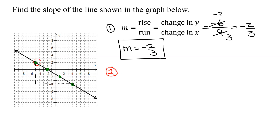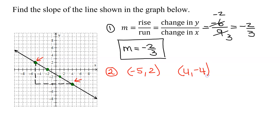What they do is they find the coordinates of the two given points. So what's the coordinates of this first point here? The x value is negative 5, the y value is 2, so it is (negative 5, 2). And what is the second point? The x value is 4 and the y value is negative 4. And now I have two points, so I can use my slope formula.